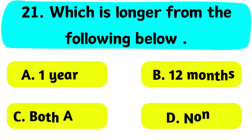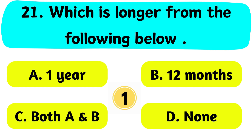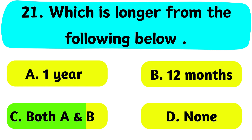Question No. 21. Which is longer from the following? A. 1 year, B. 12 months, C. Both A and B, D. None. The correct answer is Option C. Both A and B.